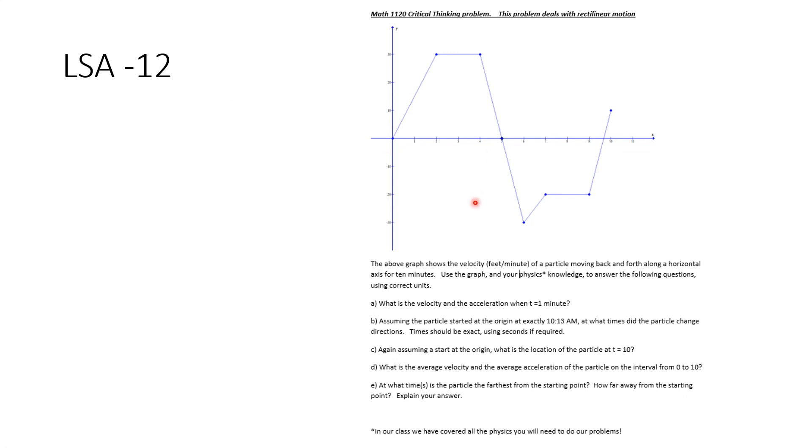Here is LSA 12. I'm giving you a chart here. The above graph shows the velocity. So this is velocity is this axis here in feet per minute of a particle. And this is time going across here. This is time and this is velocity. So it starts here and it goes faster up to there. Then it goes at the same speed and down and so on and so forth. So keep knowing that this is velocity. Use the graph and your knowledge of physics. You know enough to answer this question, to answer the following questions. But you do need to think about them. This is a critical thinking problem.